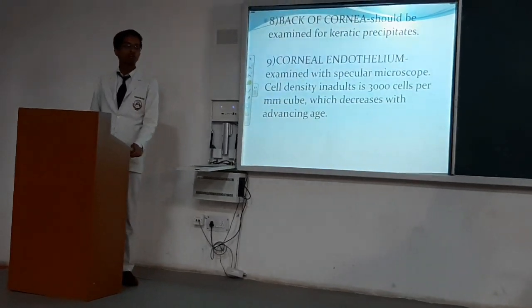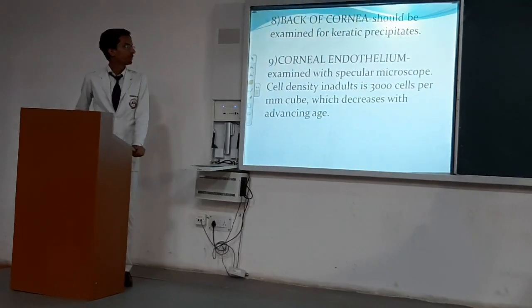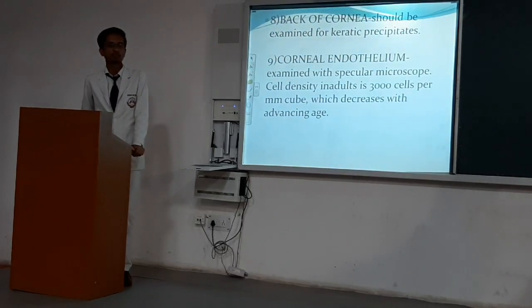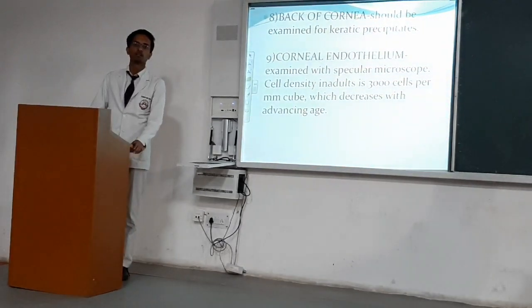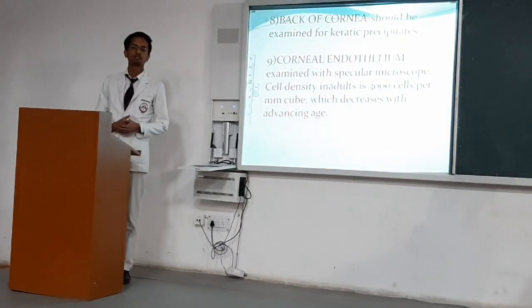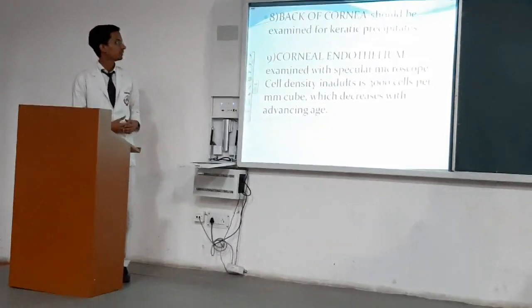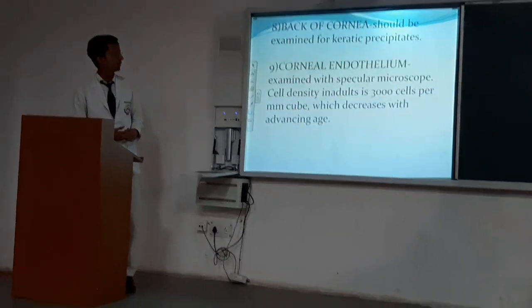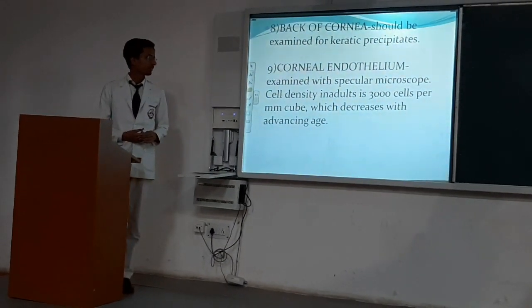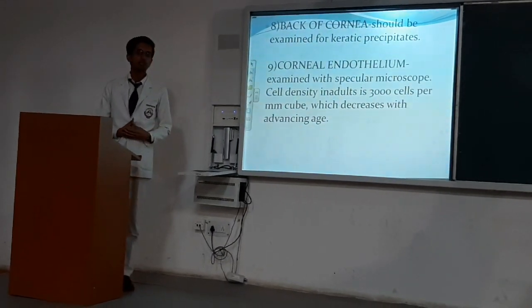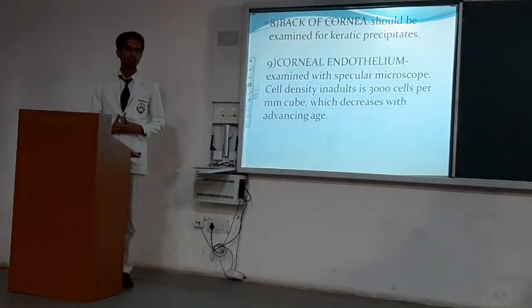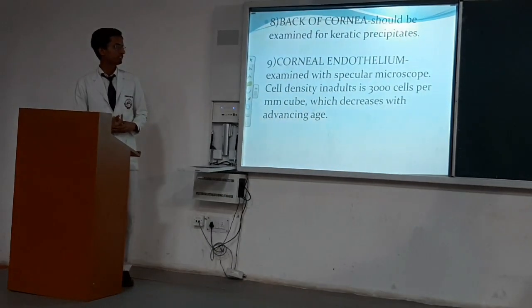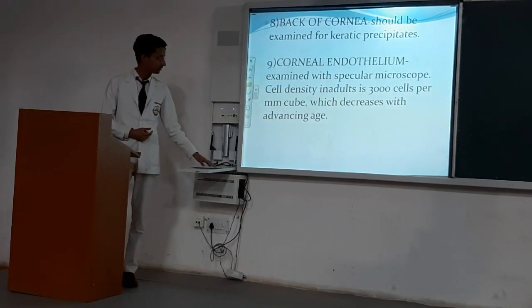The back of the cornea should be examined for keratic precipitates. These are generally seen in uveitis. Corneal endothelium can be examined with a specular microscope; cell density in adults is 3000 cells per mm², which decreases with advancing age.